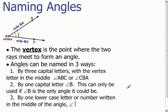There are three different ways we can name an angle. The first way is by using three capital letters with the vertex letter in the middle. So for this diagram, this angle can be called angle ABC or angle CBA. Again, the vertex has to be the middle letter.